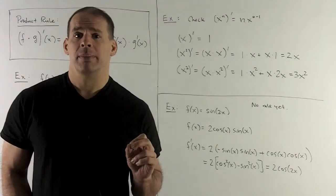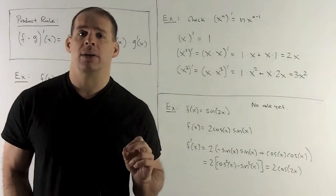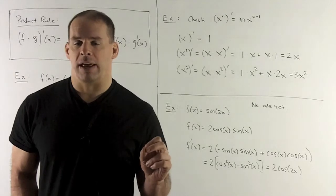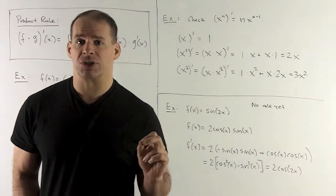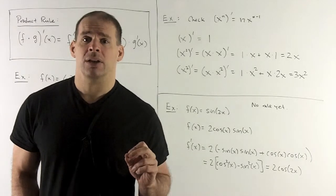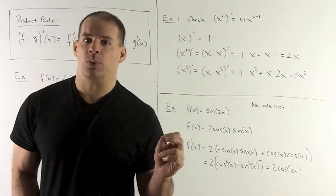If I want x³, that's just going to be x times x². We take its derivative: derivative of x is just 1, leaving me with x², and then plus x times the derivative of x², which we just saw was 2x. So our answer is going to be 3x², and that agrees with what we already know.